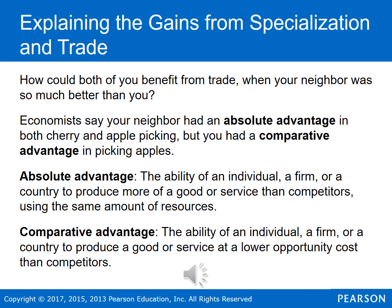How could both of you make yourselves better off through trade when your neighbor was so much better at picking fruit than you? Economists say that your neighbor had an absolute advantage in both apple picking and cherry picking. Absolute advantage is the ability of an individual, firm, or country to produce more of a good or service than competitors using the same amount of resources. You could pick 20 pounds of apples; she could pick 30 pounds of apples — your neighbor had the absolute advantage in picking apples.